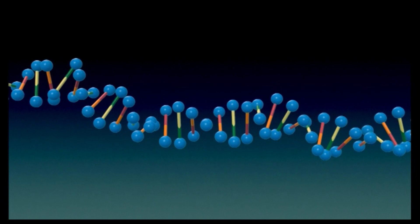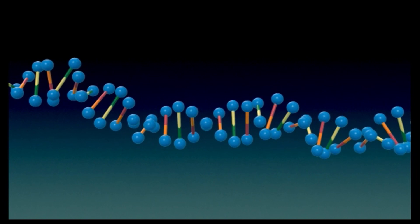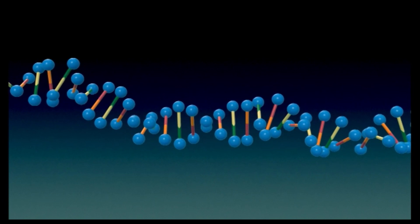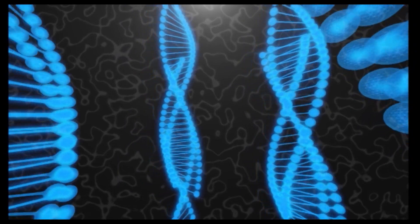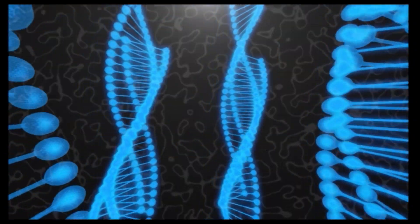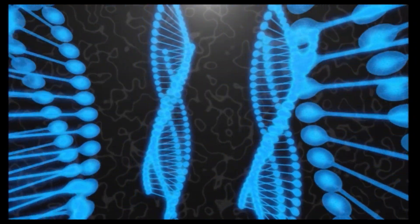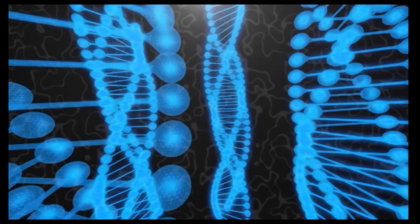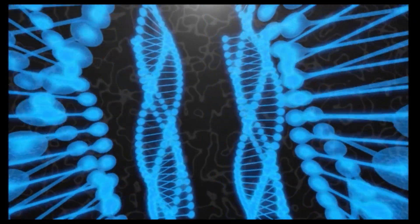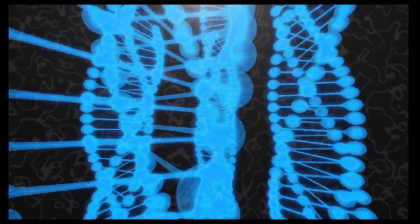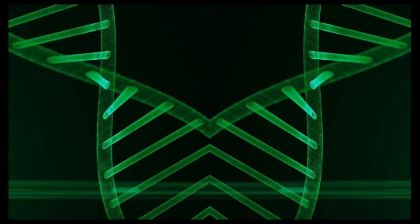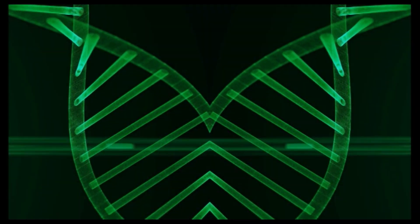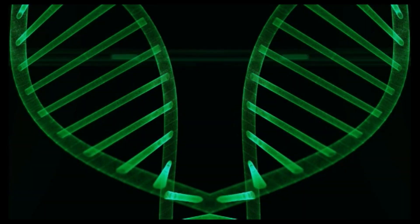All of us know the genetic material of human beings is DNA. DNA is present in chromosomes. As a human, we possess 46 chromosomes. Generally, chromosomes are of two types: one is autosomes and another is allosomes.